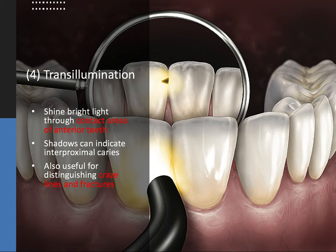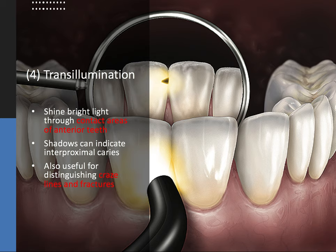Lastly, we have transillumination — the newest addition to the caries exam — which involves shining a bright light through the contact areas of anterior teeth. Seeing a shadow, oftentimes triangular as we'd expect with a smooth surface lesion, can indicate the presence of interproximal caries. It's also useful for distinguishing craze lines from fractures. If a tooth is cracked, the fracture will block the light and only allow a portion of the tooth to light up, whereas if it's only a craze line, the entire tooth will shine. This is really where this method shines — no pun intended.